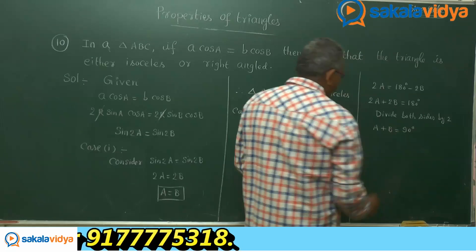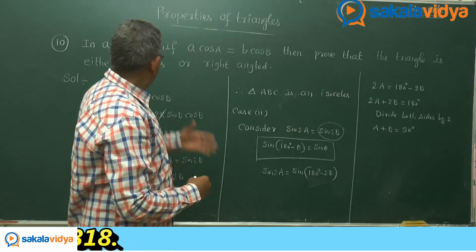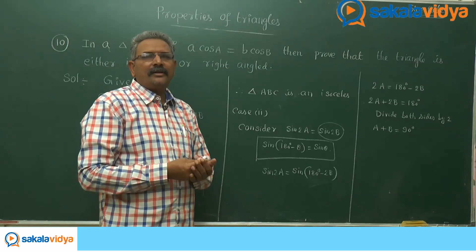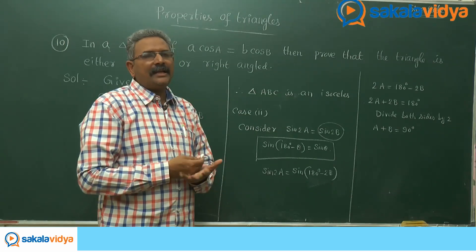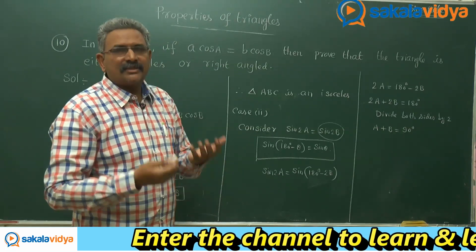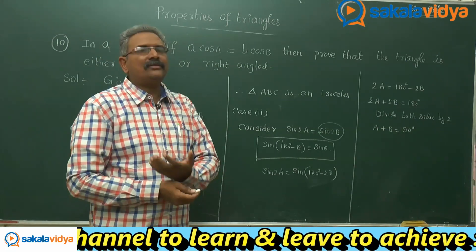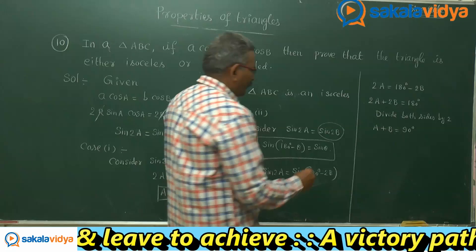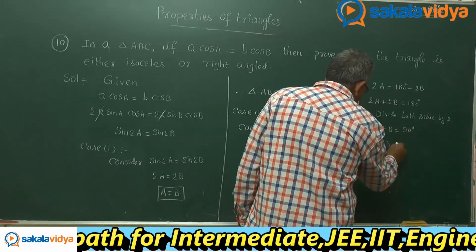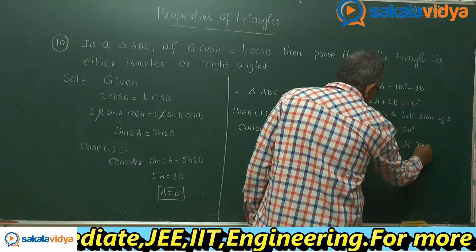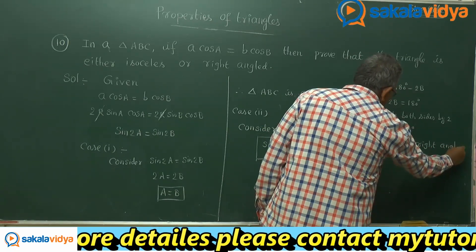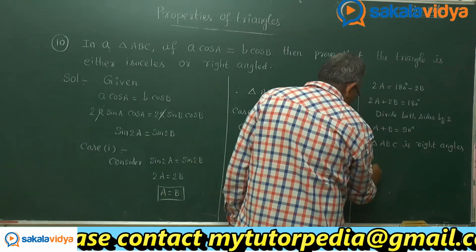If A + B equals 90° in triangle ABC, then angle C becomes 90°. Therefore, triangle ABC is a right-angle triangle at C. Hence proved.